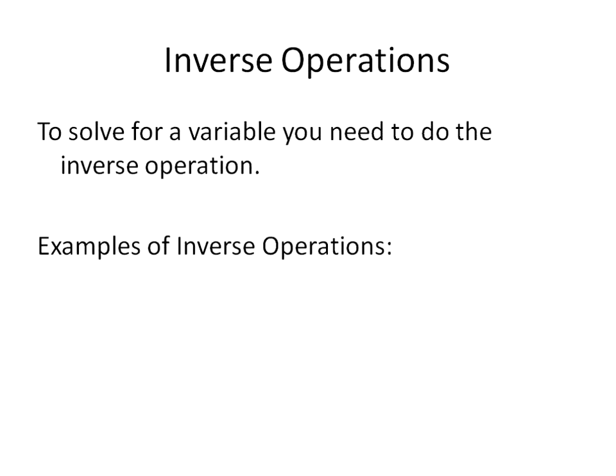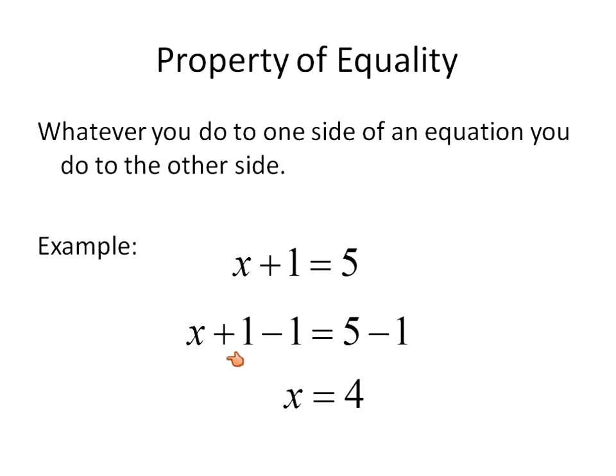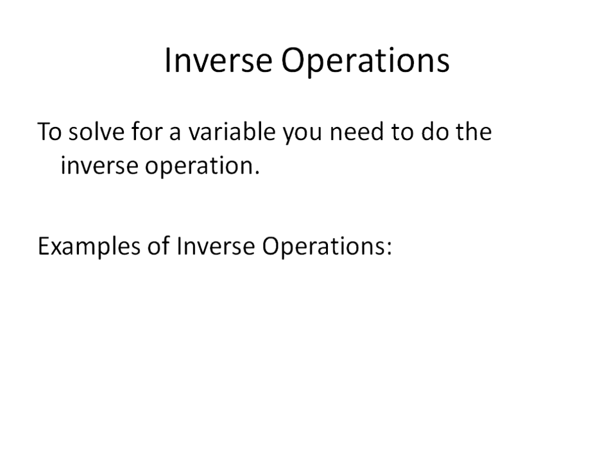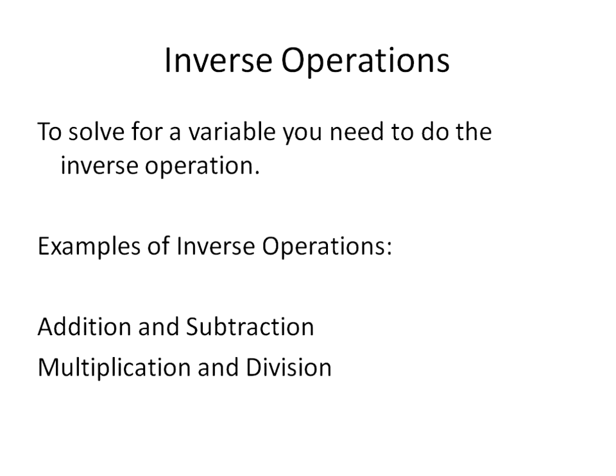Next review is something I actually just talked about briefly, and that is inverse operations. To solve for any variable, you need to do the inverse or the opposite operation. So in our previous example, we had x plus 1 — we had to do the opposite, subtracting 1. Some examples of inverse operations are that addition undoes subtraction, multiplication and division are opposites, and squaring a number is the opposite of the square root of a number. You'll see how that works in the next question when we start getting into this.